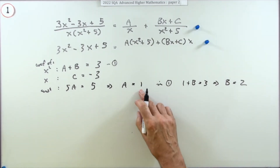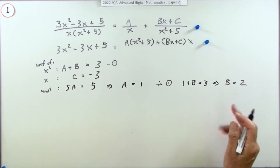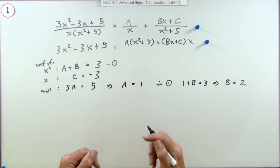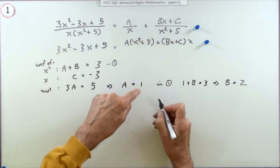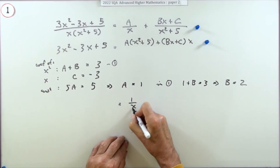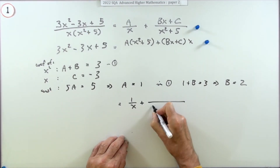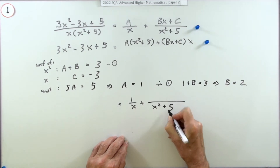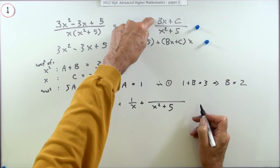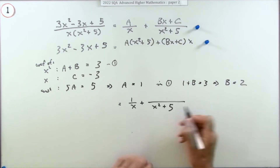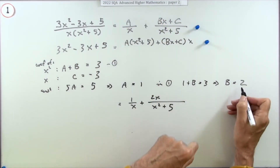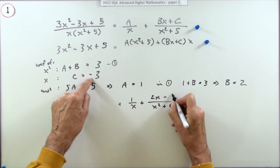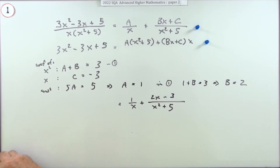You still won't get the mark until you put the values back in. So it's A over x, which is 1 over x, plus — for the numerator over x squared plus 5 — B is 2, so that's 2x, and C was negative 3. That gives the final answer and the third mark.